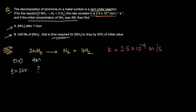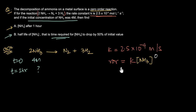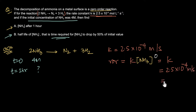Because this is a zero-order reaction, the rate can be written as k × [NH₃]⁰. Since anything to the power 0 equals 1, the rate is independent of the concentration of ammonia and is simply equal to k — which is 2.5 × 10⁻⁴ molar per second, or 0.00025 molar per second.